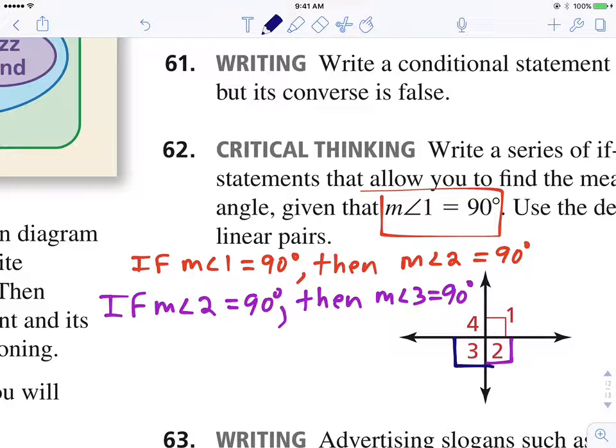And finally, angles three and four are linear pairs.